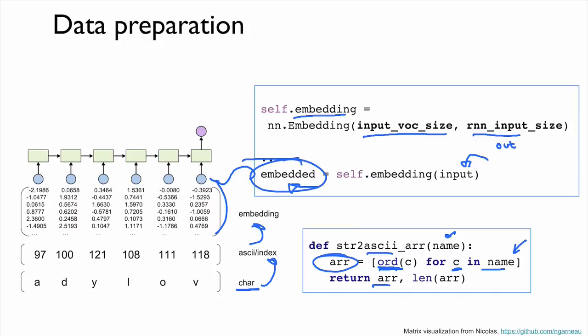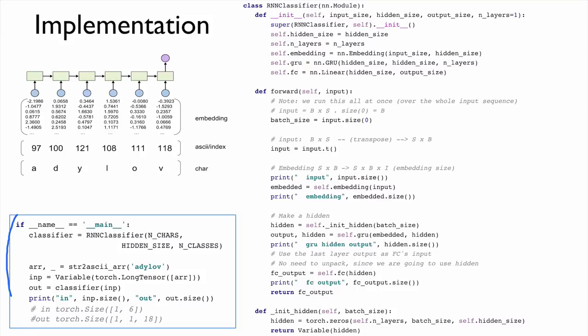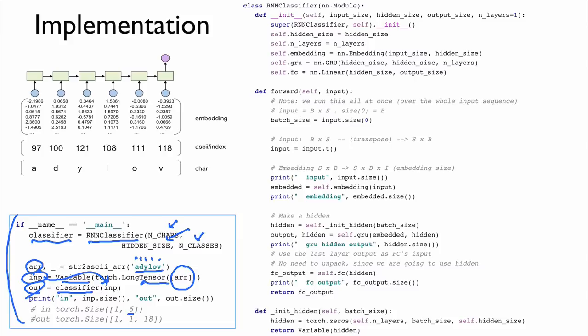Let's look at the entire source code. In the main module, we create an RNN classifier with given hyperparameters. For a given name, we create the ASCII array, turn it into a tensor and a PyTorch variable, and feed it to our classifier to get the output. We need to pay attention to the rank and shape of the input and output. The input has 6 characters, so it's 1 by 6. The output will have 18 different values because we are predicting 18 countries.